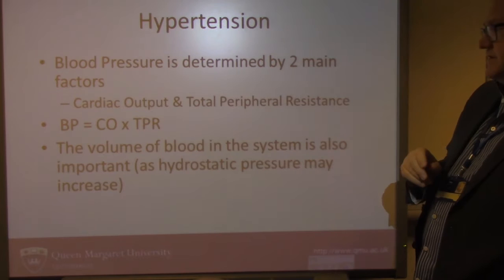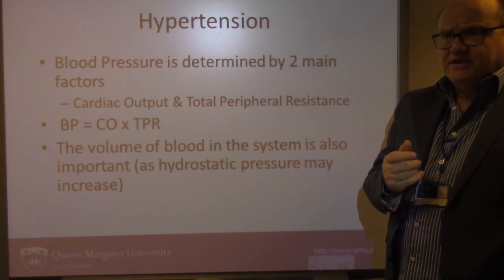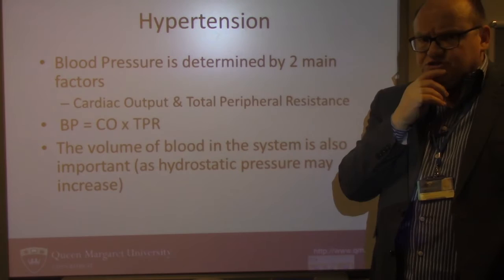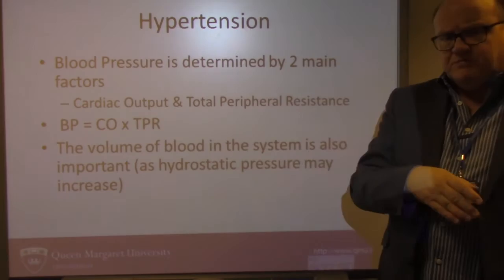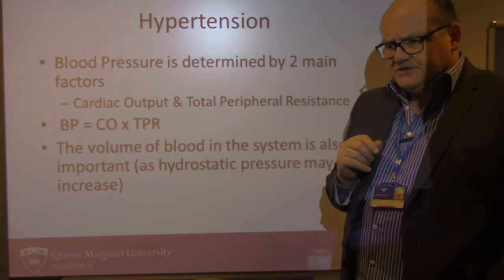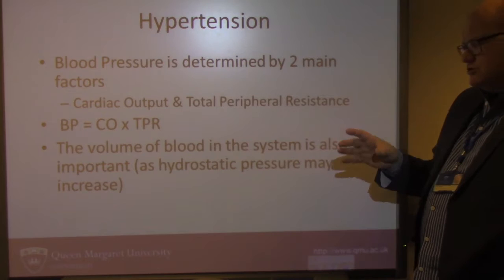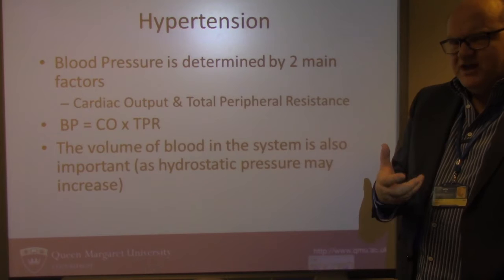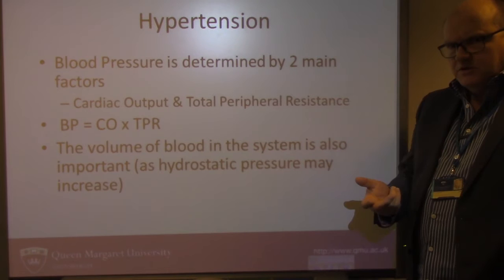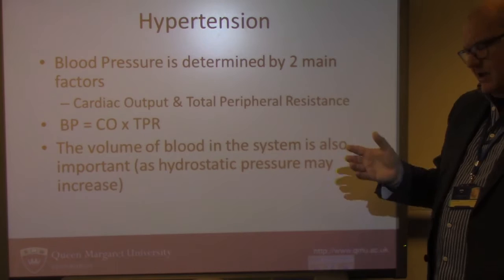Your blood pressure is determined by two main factors: cardiac output — the amount of blood leaving your heart in any given minute — and total peripheral resistance, which is the resistance to flow through the blood vessels. The formula is nice and simple: BP equals CO times TPR. The volume of blood in the system is also important, because more blood in the system will affect the pressure. So if blood volume goes up, that can also have an impact, and we need to bear all those factors in mind when looking at ways to manipulate high blood pressure.